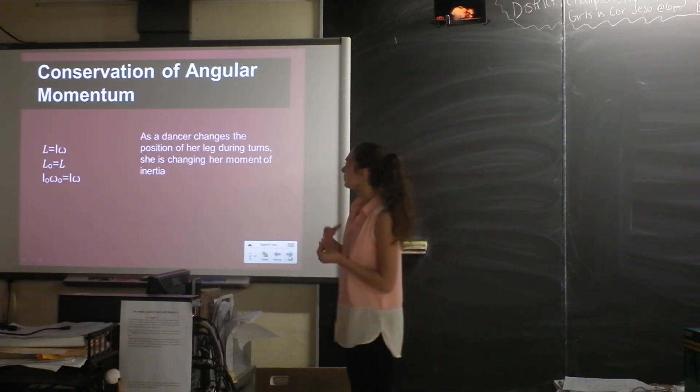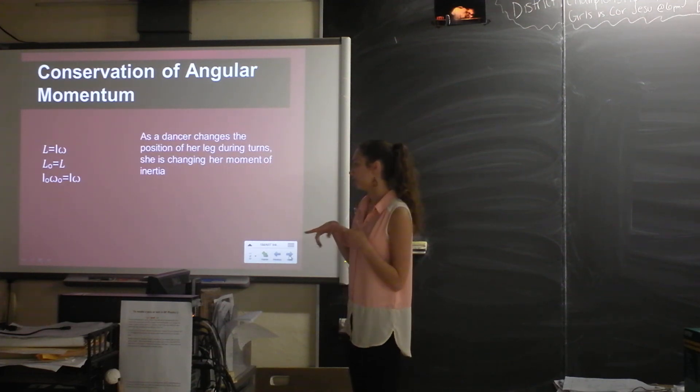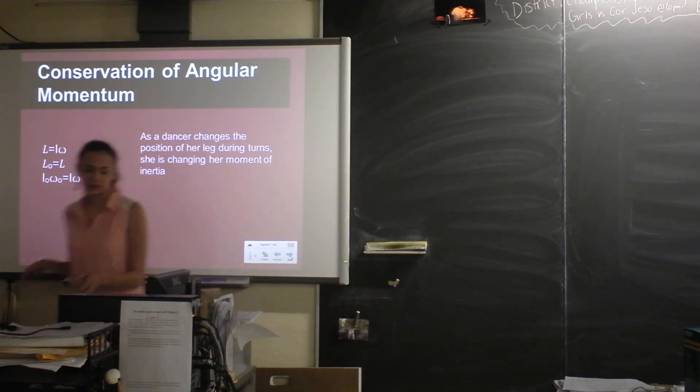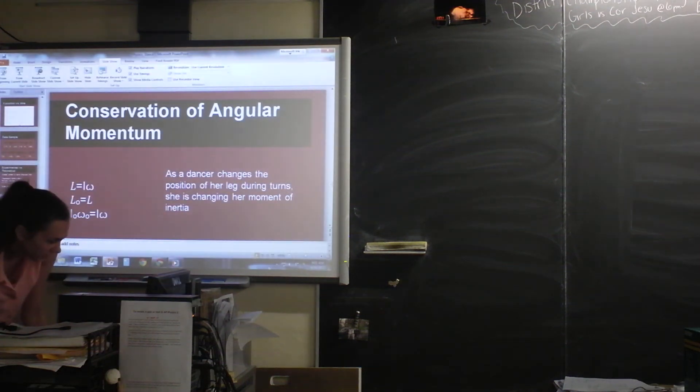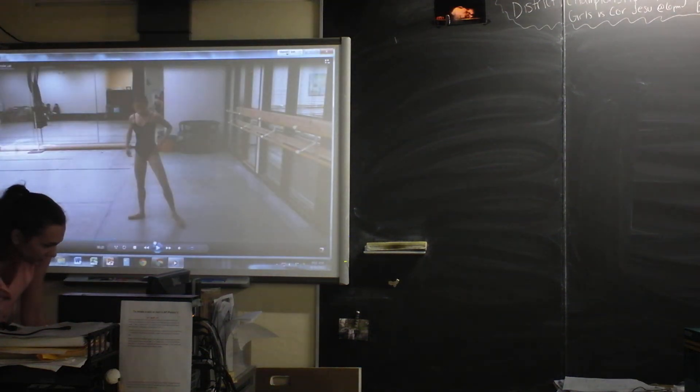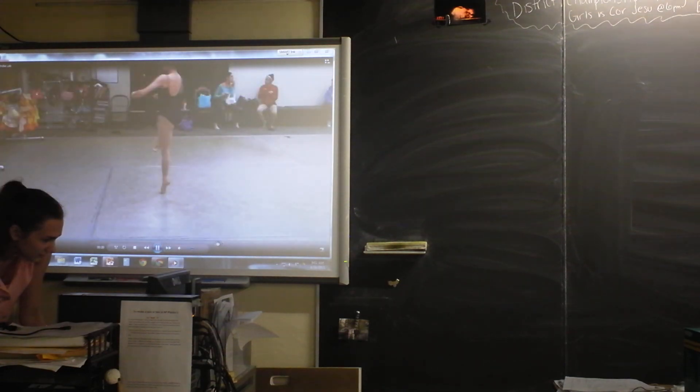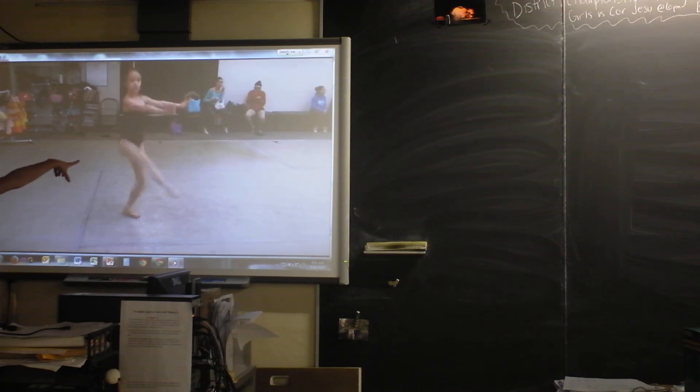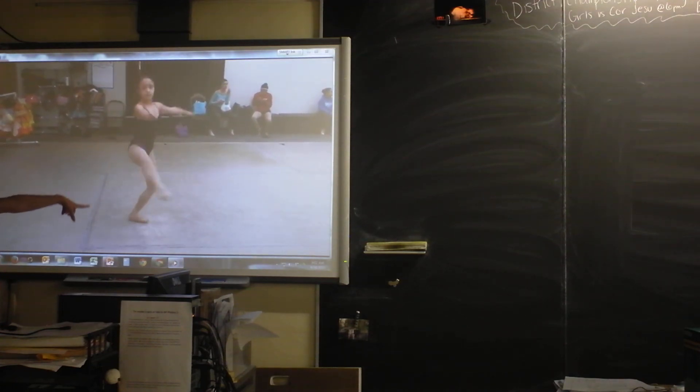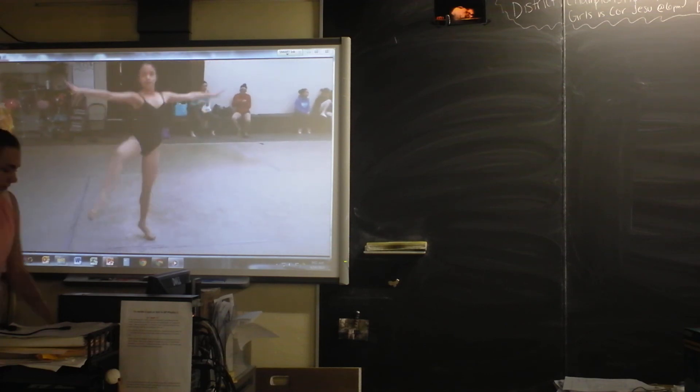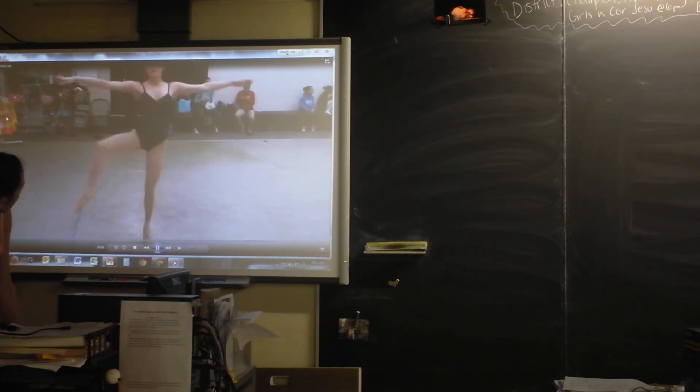For conservation of angular momentum, I used a different turn. The other turn was called a pirouette. And the one I used for this was a fouetté, where she was actually changing the position of her leg during the turn. So she's in a passé position there and then she straightens her leg and she actually comes down off pointe for a minute. She's feeding more energy into the rotation when her foot's down.